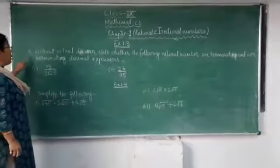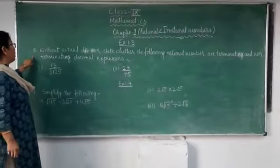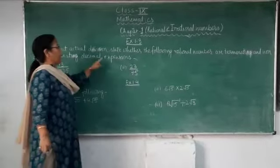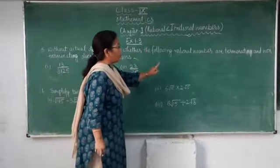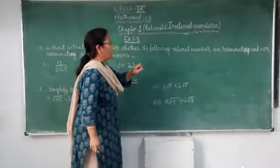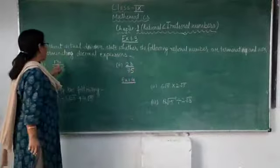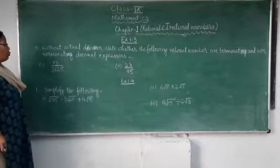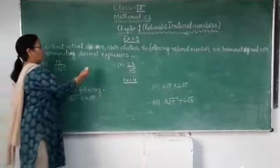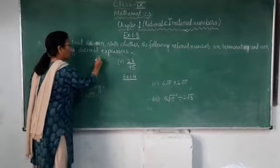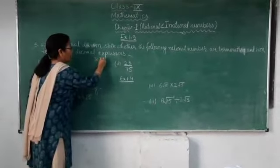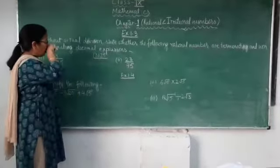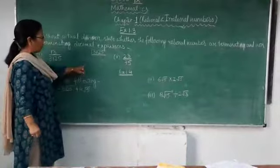Now question number 3 of exercise 1.3: without actual division, state whether the following rational numbers are terminating or non-terminating decimal expressions. In this question, you find the factors of the denominator. For example, 3125 — the last digit is 5, so it is divisible by 5.